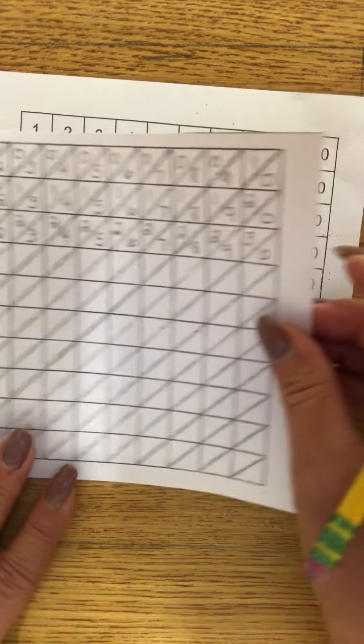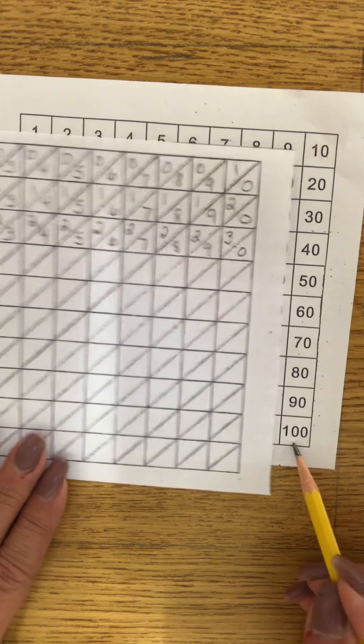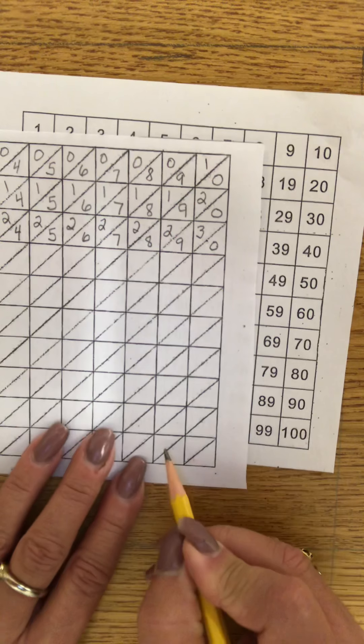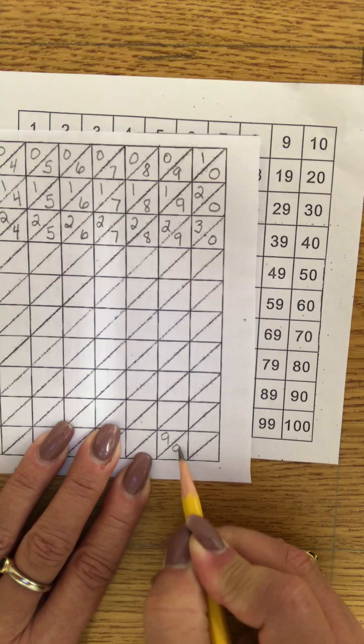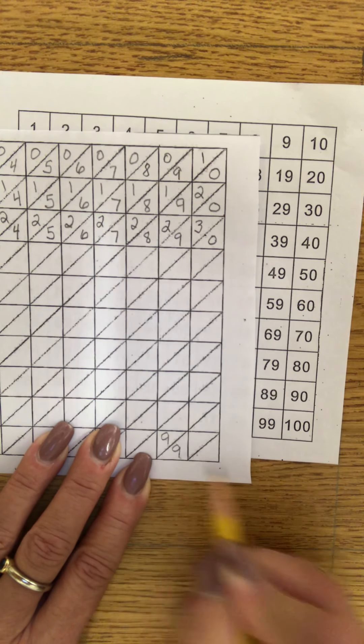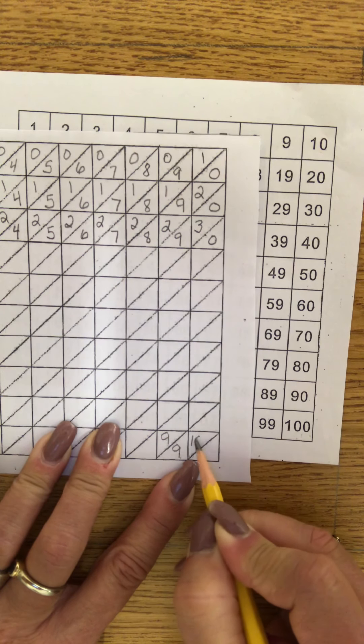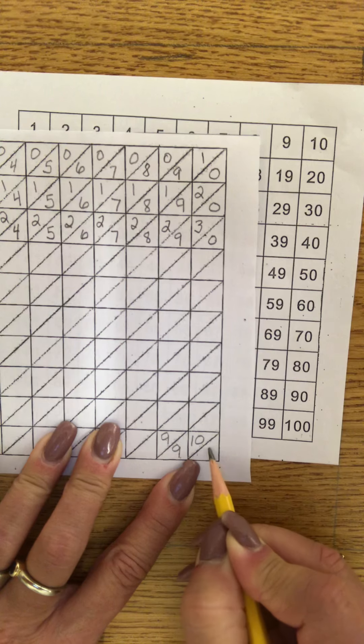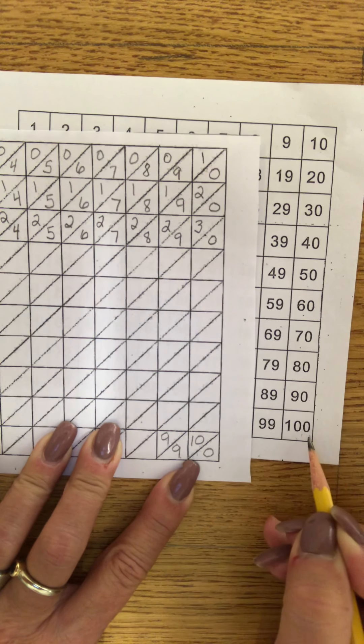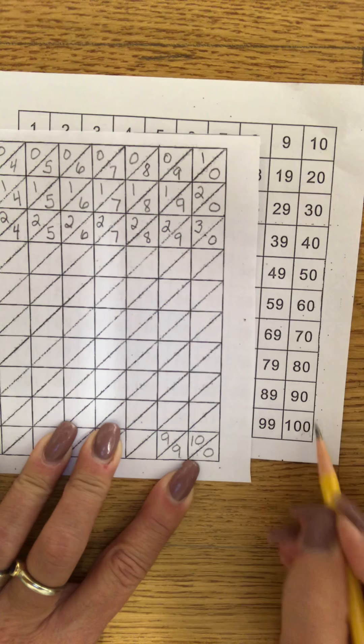Now when you get down to that 100, it's going to look funny, isn't it? 99 is nine tens and nine ones, 99. What happens here? It's actually ten tens and zero ones. Ten times ten is 100.